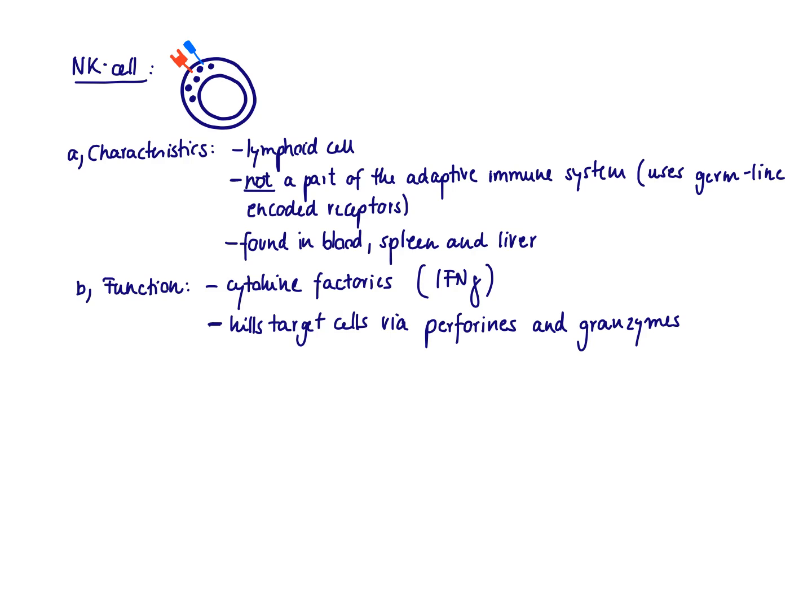In this video, I want to talk about the NK cell, the natural killer cell. The natural killer cell is a lymphoid cell, so it comes from the lymphoid progenitor, the same progenitor that gives rise to the T and B cell.